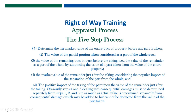The five steps are: First, determine the fair market value of the entire tract or property before any part is taken. Second, the value of the partial portion taken, considered as a part of the whole tract. Number three, the value of the remaining tract just before the taking — the value of the remainder as a part of the whole, by subtracting the value of the part taken from the value of the entire property. Fourth, the market value of the remainder just after the taking, considering the negative impact of the separation of the part from the whole. And fifth, the positive impact of the taking upon the value of the remainder just after the taking.